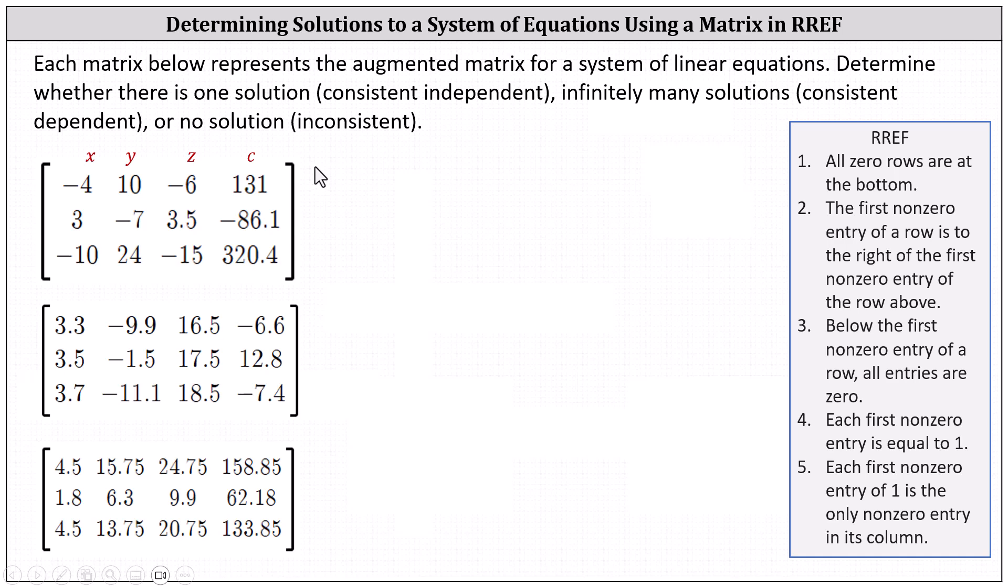One way to determine whether there is one solution, infinite solutions, or no solution, is to write each augmented matrix in reduced row echelon form, which for review I've defined here on the right. All these conditions must be met in order for an augmented matrix to be in reduced row echelon form. This lesson is not going to focus on how to write an augmented matrix in reduced row echelon form.